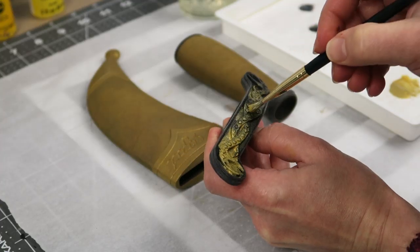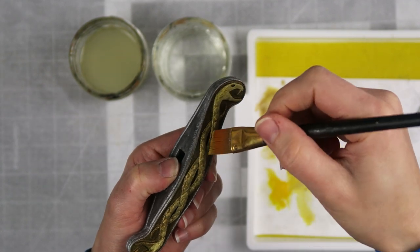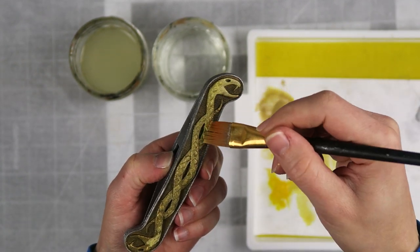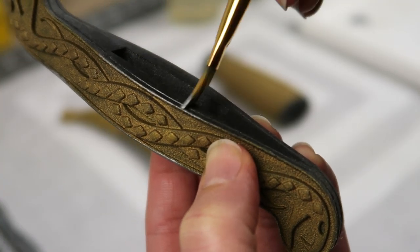I also mixed in some burnt umber and a muted yellow color to provide some variation to that pure metallic. And for the crossguard, I based out the entire center using gold for starters, and then brushed some silver over the top and the bottom.